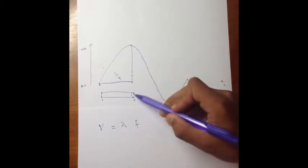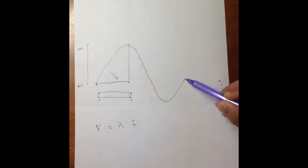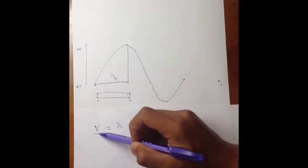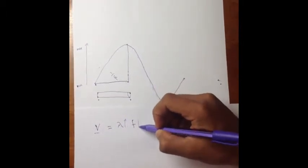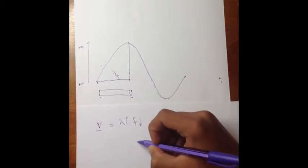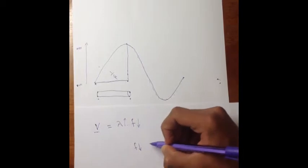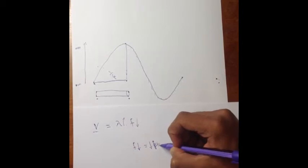And so, if you have a longer didgeridoo, you are going to have a longer wavelength. And if the speed of sound is to remain constant, a longer wavelength will mean you have a shorter frequency. And a shorter frequency will mean that you have a lower pitch.